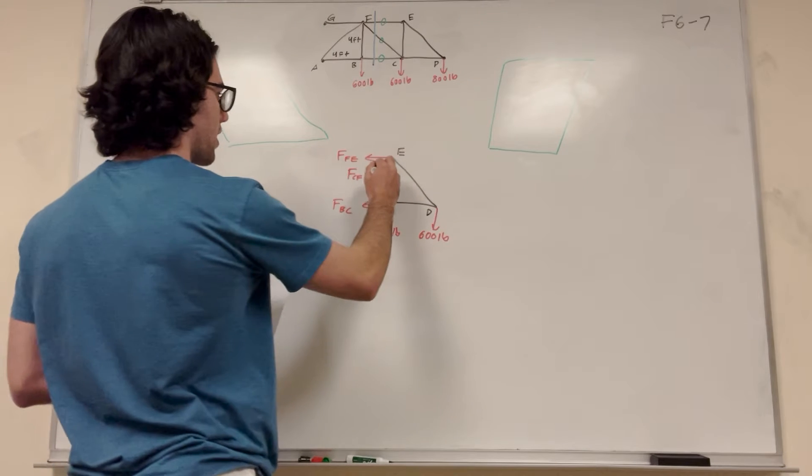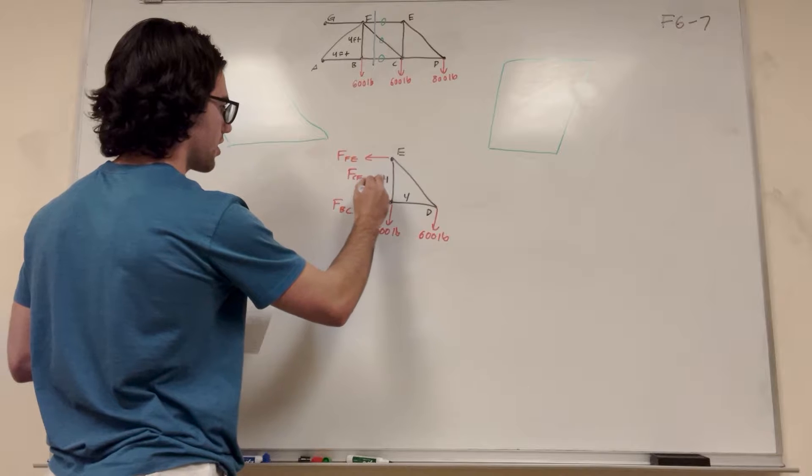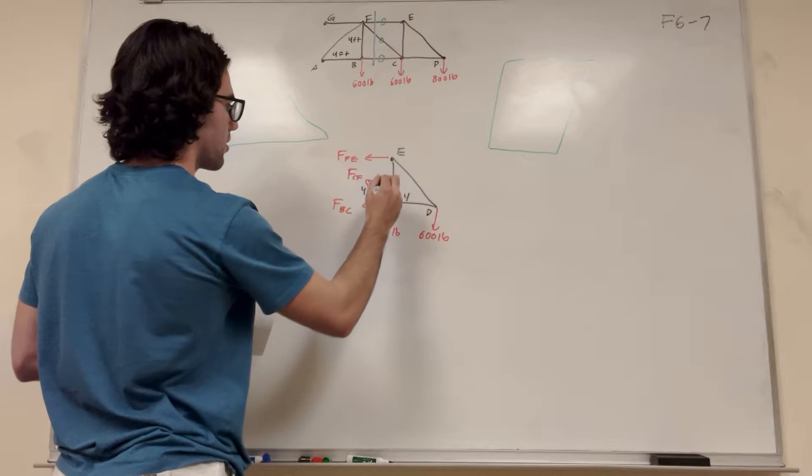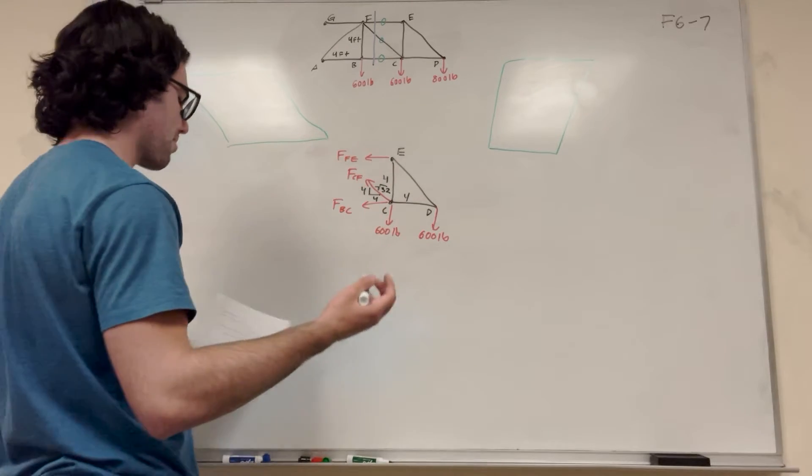So let's go ahead and do that. Let's make sure to remember that this is 4 feet, this is 4 feet. And then the ratio of this triangle is 4, 4 square root of 36, or 32. You can just do that with Pythagorean theorem.